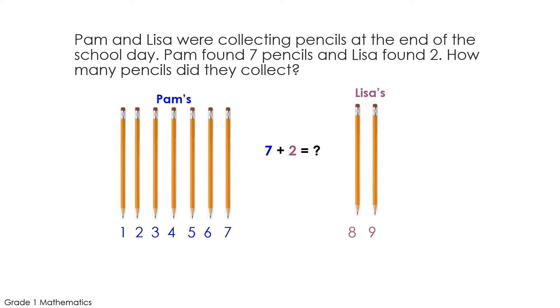Maybe you counted them one by one like this: one, two, three, four, five, six, seven, eight, nine. Or maybe you knew that Pam had seven pencils and then could count on Lisa's two pencils like this: seven, eight, nine. And see that there are nine pencils all together. Seven pencils plus two pencils is the same as nine pencils.